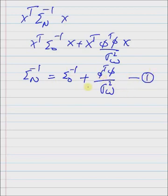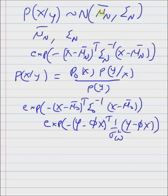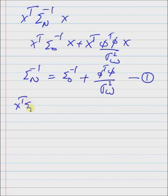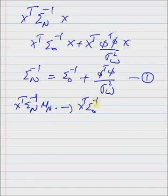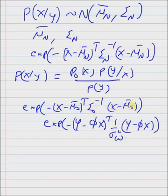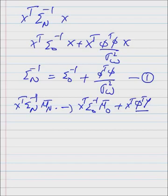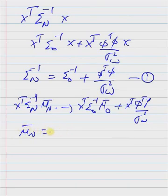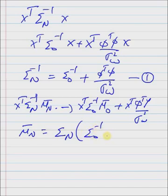This is the expression for the posterior covariance matrix. Similarly, comparing the linear terms in the two functions, we get xᵀ Σ_n⁻¹ μ_n compared to xᵀ Σ₀⁻¹ μ₀ plus xᵀ (Φᵀ y / σ²_w). Hence, the posterior mean vector μ_n is given by transferring the covariance matrix to the other side: μ_n equals Σ_n multiplied by (Σ₀⁻¹ μ₀ + Φᵀ y / σ²_w). This is the expression for the posterior mean vector.